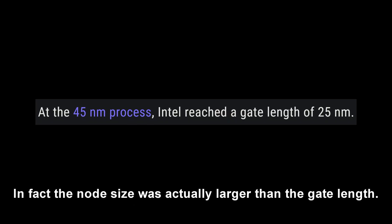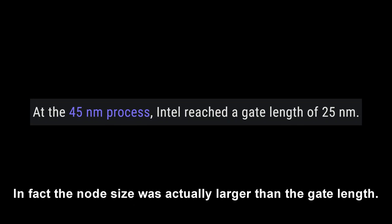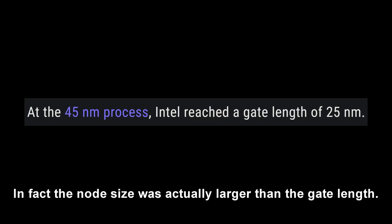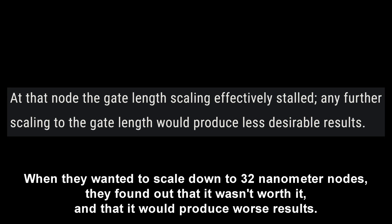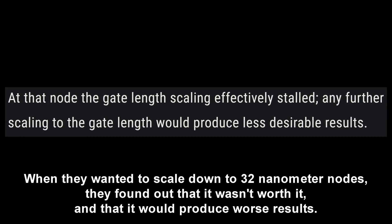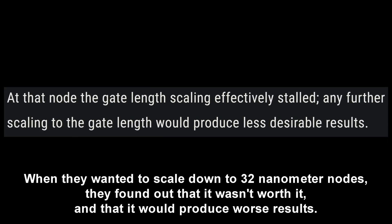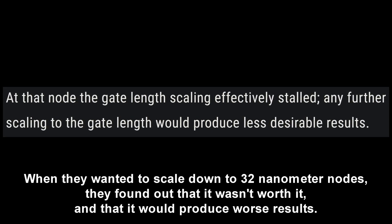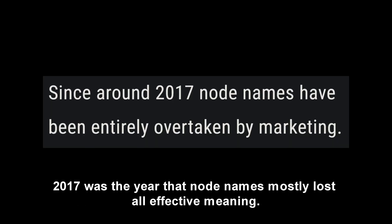But it wasn't always like this. When Intel started producing 45 nanometer nodes, the term actually had a meaning — in fact, the node size was actually larger than the gate length. When they wanted to scale down to 32 nanometer nodes, they found out it wasn't actually worth it and would produce worse results. That's effectively when the term lost its meaning.